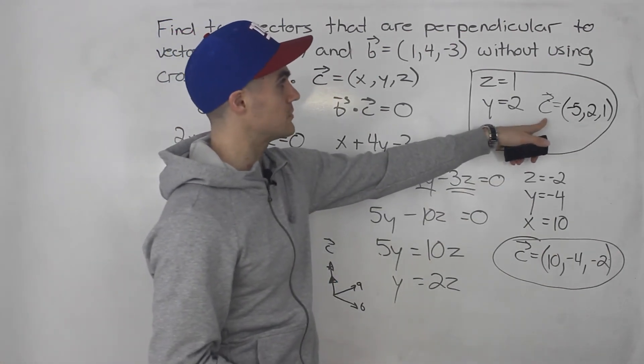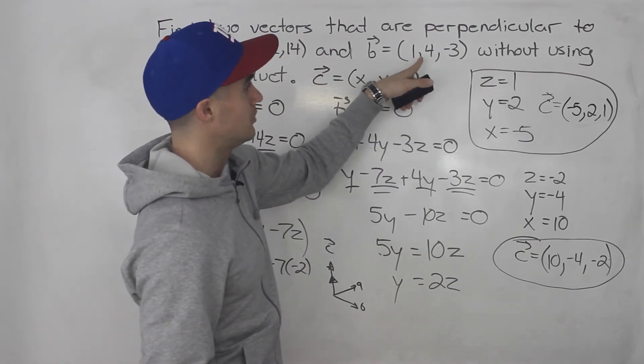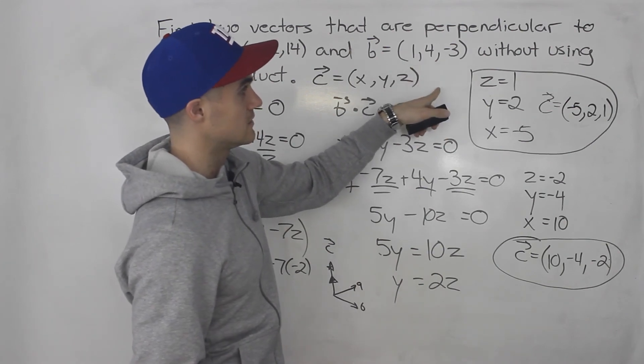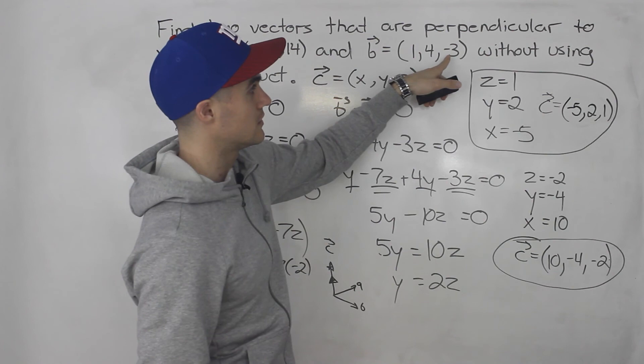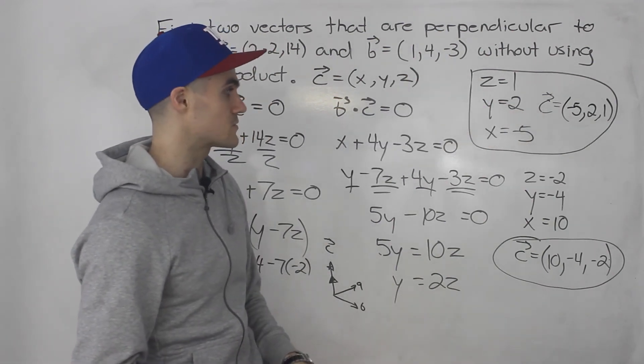Right? What about taking the dot product between C and B? So negative 5 times 1 plus 4 times 2. So that would be negative 5 plus 8, which is positive 3. And then negative 3 times 1 is negative 3. 3 minus 3 is 0 as well.